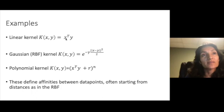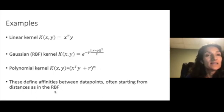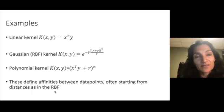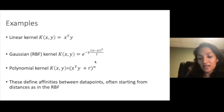A polynomial kernel similar to the linear kernel has a dot product, but it's also shifted and exponentiated. These define affinities between data points. In other words, these kernel functions are evaluating how similar data points are, often starting from distances like in the RBF kernel.